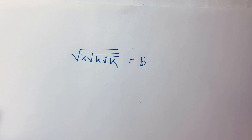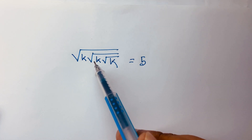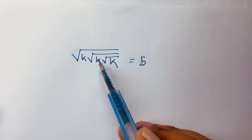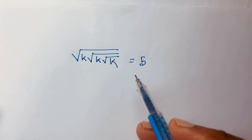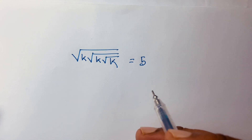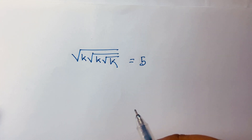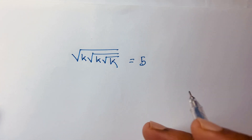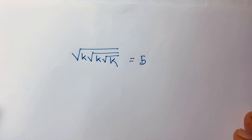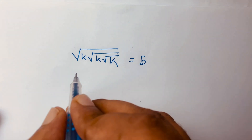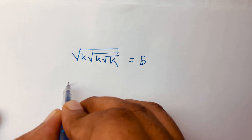A nice square root problem: square root of k times square root of k times square root of k is equal to 5. We'll find out what is the value of k in this square root problem.